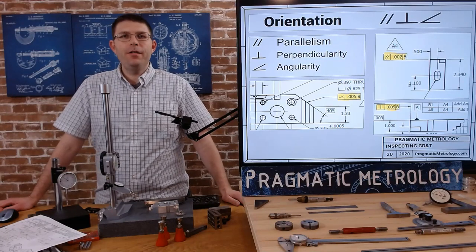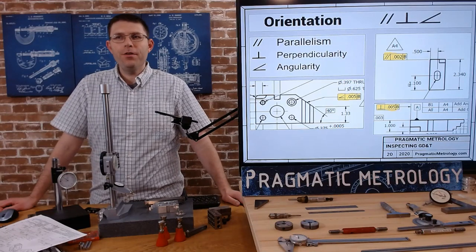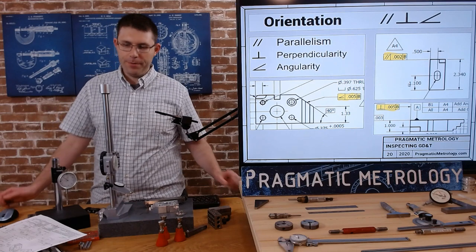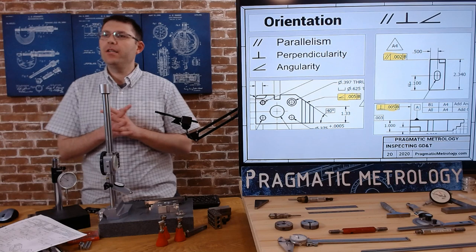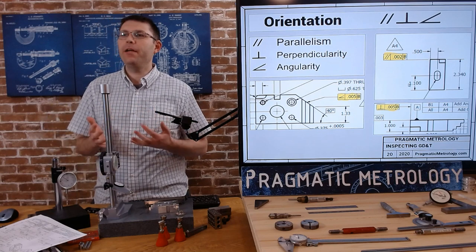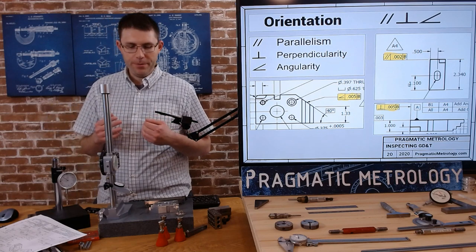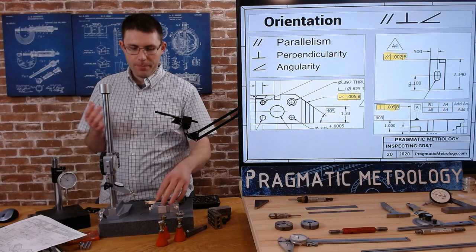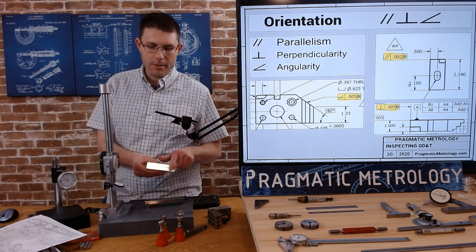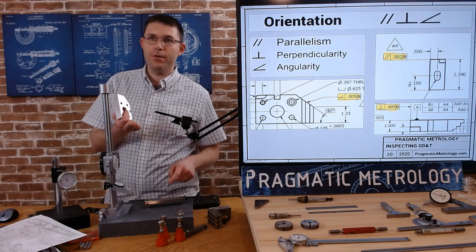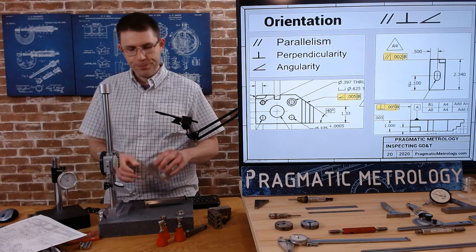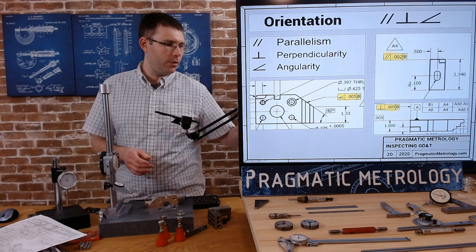In the last video I neglected to measure the angularity requirement on the angle block, so let's do that. Right now the requirement says angularity of five thousandths to datum B. To set that up we're going to take datum B and set it up on a sine bar and raise it to 40 degrees for a subtraction measurement.